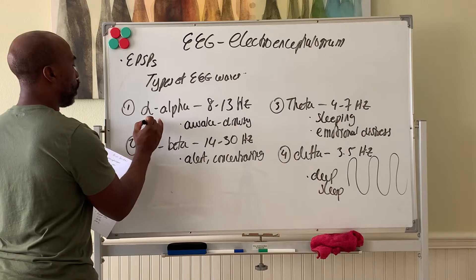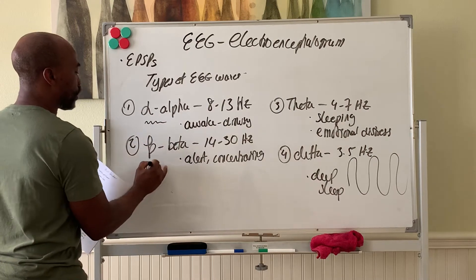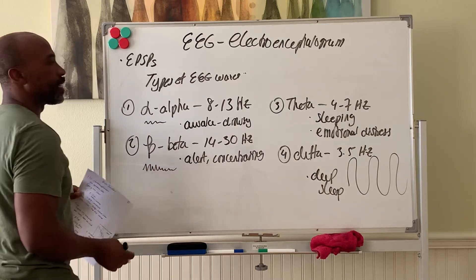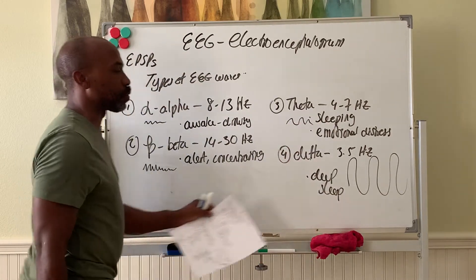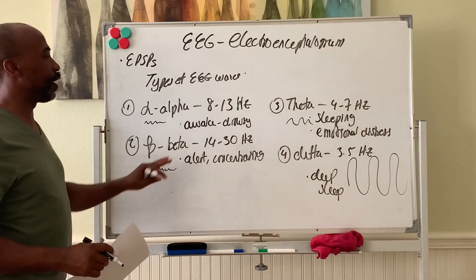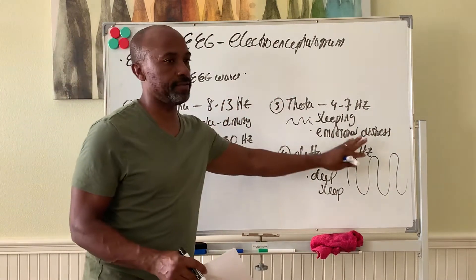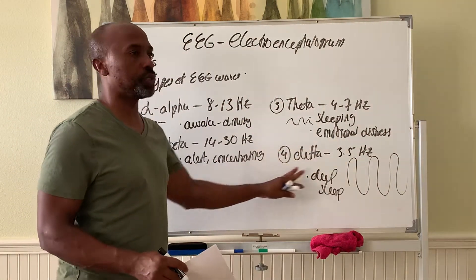So alpha waves are small and fast. Beta waves are faster. Thetas are a bit slower, and deltas are the slowest ones. Please note for me the frequencies of the different waves and when you see them.